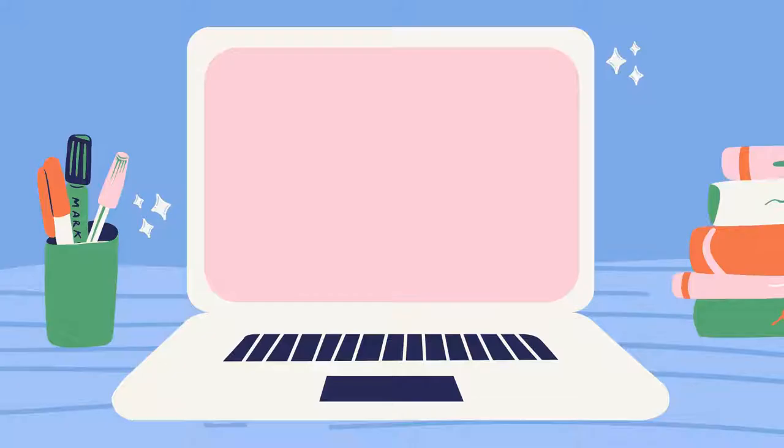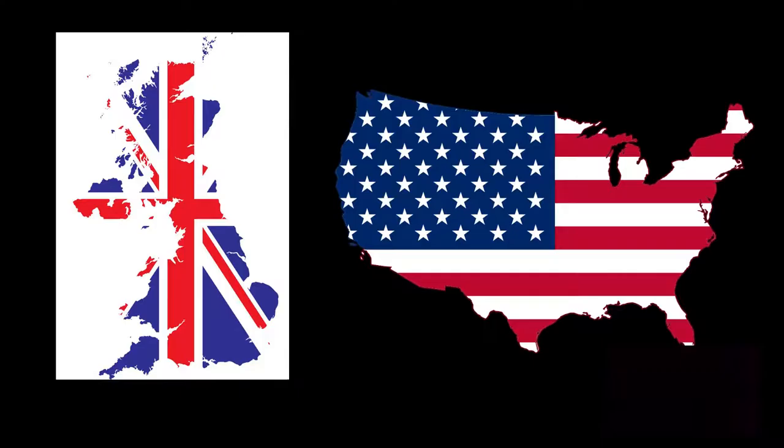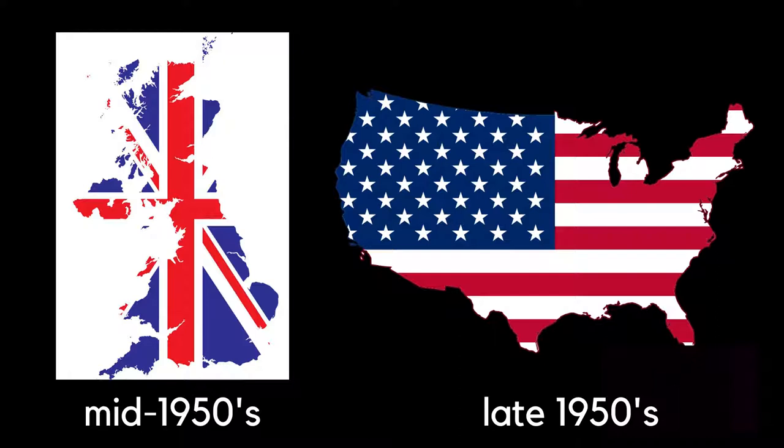History of Pop Art. Pop art emerged in both New York and London during the mid-1950s and became the dominant avant-garde style until the late 1960s. Pop art emerged in the mid-1950s in Britain and in the late 1950s in the United States.